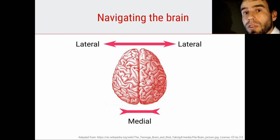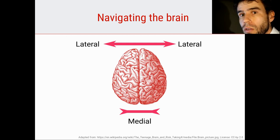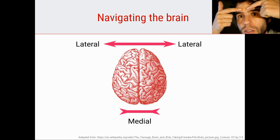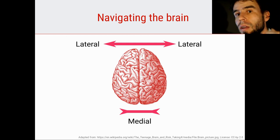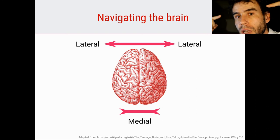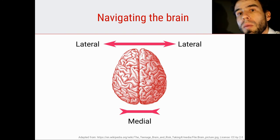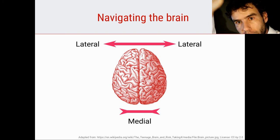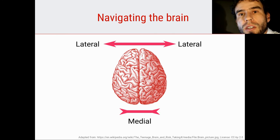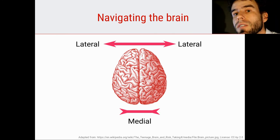Then we have the terms lateral and medial. Lateral means towards the sides, in that direction. Whereas medial means towards the center. So if we talk about a medial brain structure, it's kind of in the center of your brain, whereas a lateral brain structure is always towards the sides.